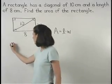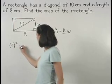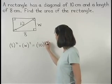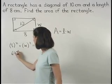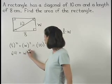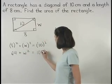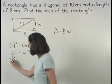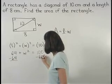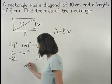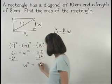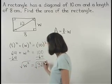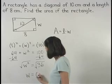So we have 8 squared plus W squared equals 10 squared. Or 64 plus W squared equals 100. And subtracting 64 from both sides gives us W squared equals 36. And square rooting both sides, we find that W equals 6.